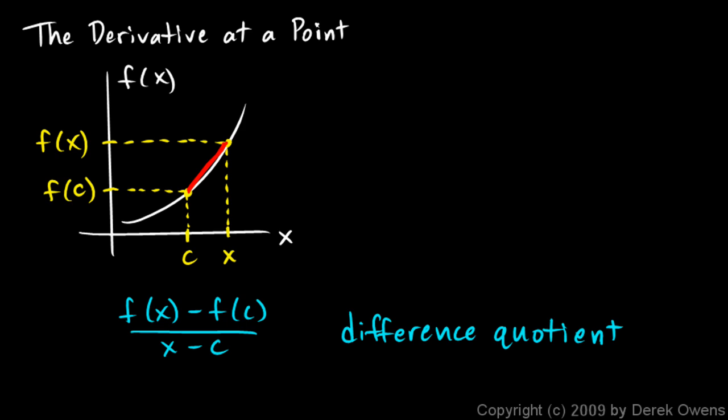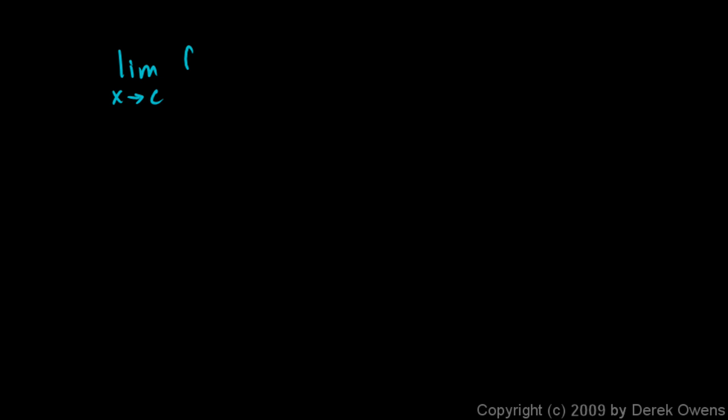What we did earlier in the course was approximations like this — we pick a really tiny interval and get a pretty good approximation. But now we're going to find the exact value of the derivative at point c. We can find the exact value if we imagine the point x sliding all the way over to point c. That will give us 0 over 0, which we can't compute directly, but the slope does approach a particular value as x gets closer and closer to c. We can find that value by taking the limit of the difference quotient: the limit as x approaches c of f of x minus f of c over x minus c. That value is the derivative at point c — the exact value of the slope at that point.